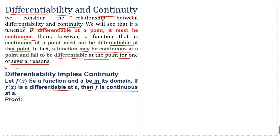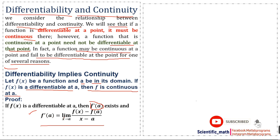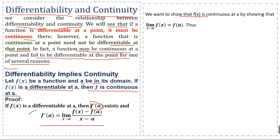We will prove that if a given function is differentiable at a given point in its domain, then the function will also be continuous at that point. If f(x) is differentiable at a, then f'(a) exists — the derivative of the function at point a exists. The definition of the derivative is: f'(a) = limit as x approaches a of [f(x) − f(a)] / [x − a].